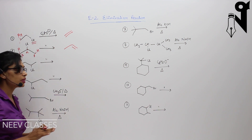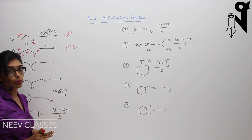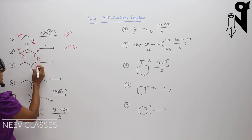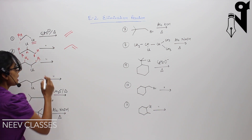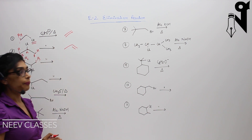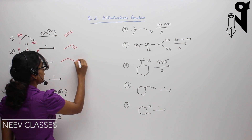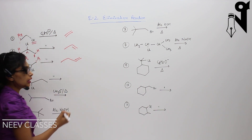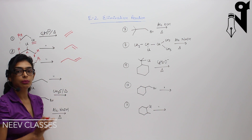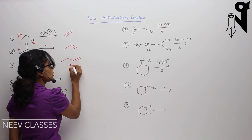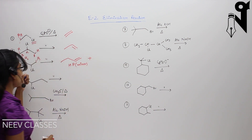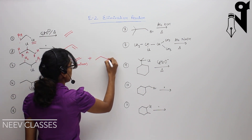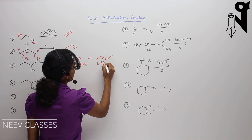In both of these cases we don't have anything specific to Zaitsev or Hoffman because we can't have different products. For the third question, we have beta carbon 1 and beta carbon 2 with respective hydrogens. If hydrogen is removed from beta 1, which is less alkylated, the alkene formed is the Hoffman product — present in minor quantities. If removal happens from beta 2, the product is the Zaitsev product, present in major quantities.